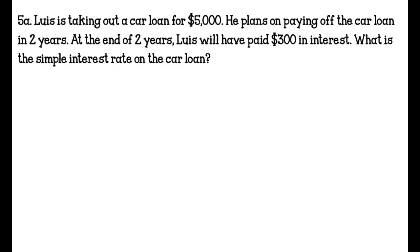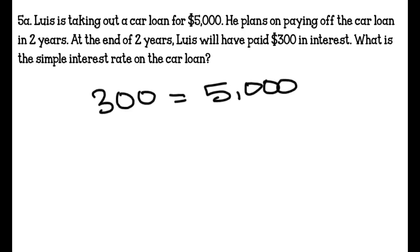Lewis is taking out a car loan for $5,000. He plans on paying off the car loan in two years. At the end of two years, Lewis will have paid $300 in interest. What is the simple interest rate on the car loan? So we have $300 in interest, $5,000 is the original amount, we don't know the rate, but we know the time is two. We first take 2 times 5,000 and that gets us 10,000R.